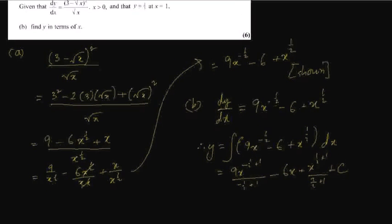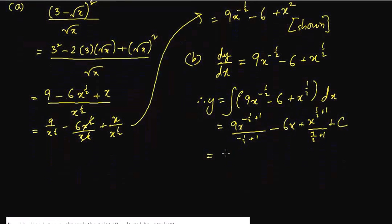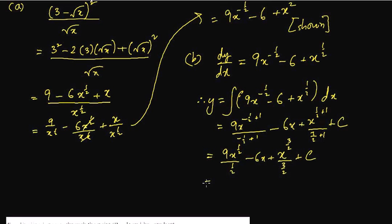And there is a plus C — don't forget the plus C for indefinite integrals. So we write 9x to the power half divided by half, minus 6x, plus x to the power 3/2 divided by 3/2, plus C. So 9 divided by half is 18, giving 18x to the power half, minus 6x, plus 2/3 x to the power 3/2, plus C.